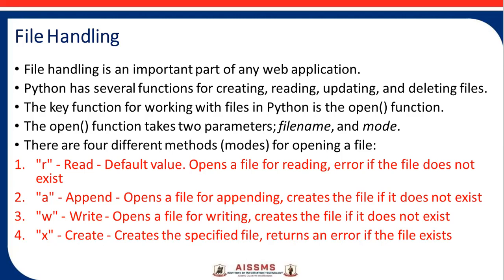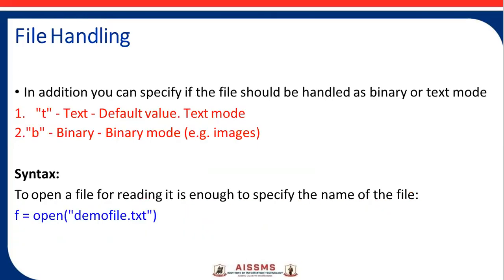Then A means append — it opens a file for appending and creates the file if it does not exist. Then W for write — it opens a file for writing and creates the file if it does not exist. And X for create — it creates the specified file and returns an error if the file already exists.